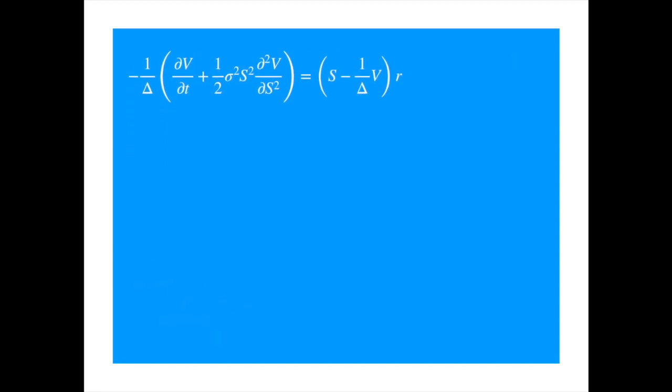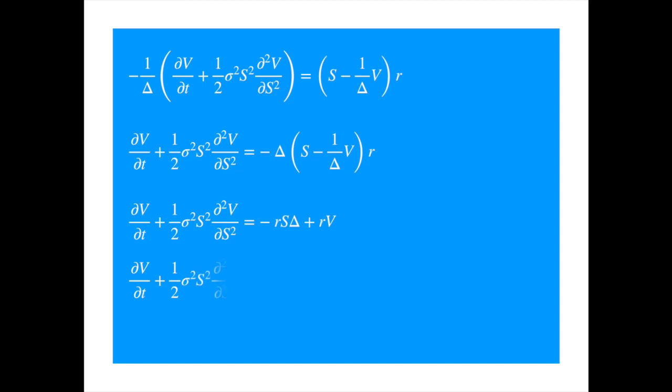We shift the delta to the right-hand side. Now we get rid of the brackets on the right-hand side, and then just substitute the delta to get the Black-Scholes PDE. Bam!